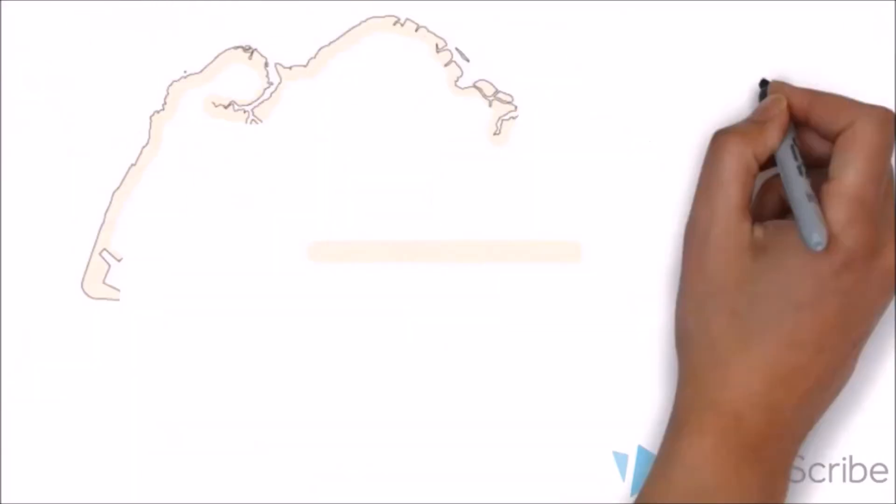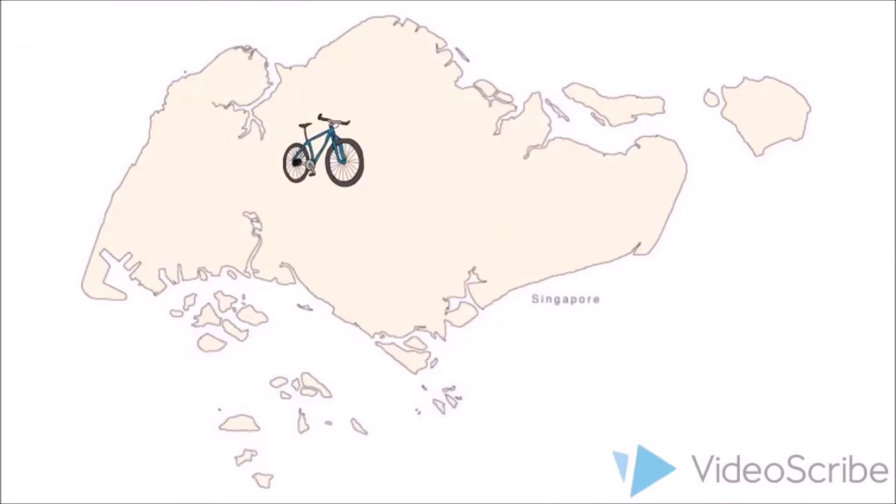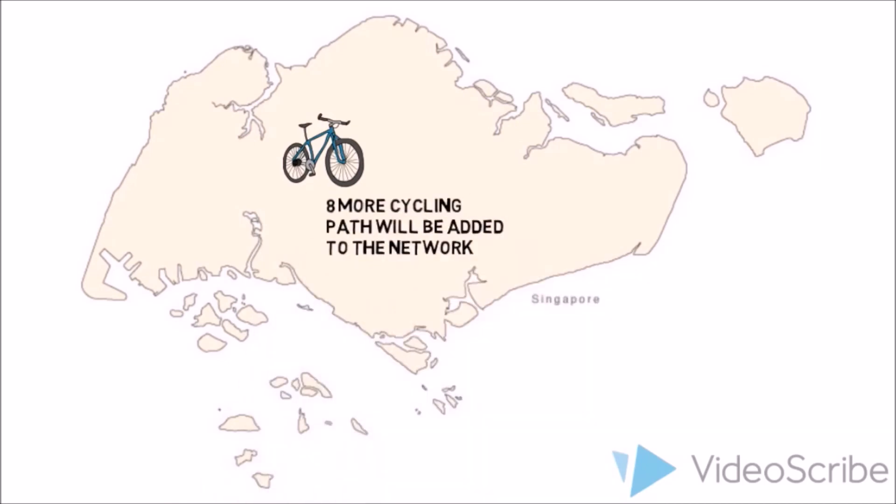Besides having a well-structured public transportation system, we can start inculcating a bicycle culture to travel more sustainably. LTA will be adding 8 more cycling paths to the network by 2025 at Yishun, Punggol, Bedok, Pasir Ris, Changi Simei, Jurong Lake District, Marina Bay, and Taman Jurong.